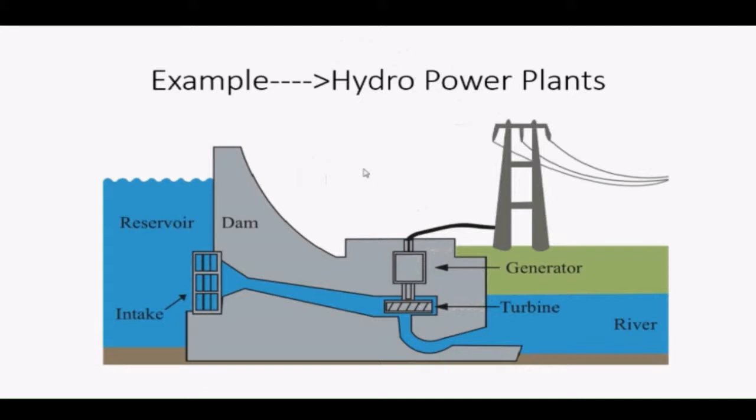In this example, we can see the hydraulic power plant. Water comes from the reservoir and goes around the turbine, which is connected to a generator. When water moves the turbine, the turbine will create a changing magnetic field inside the generator, and as a result, the generator will generate an electric field.